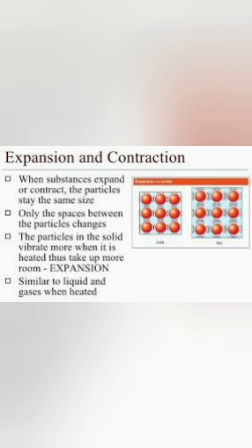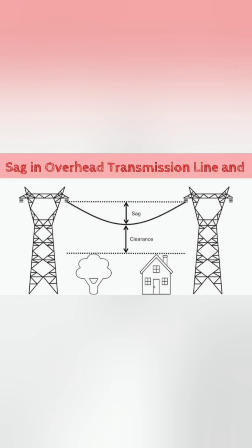Gases expand the most on heating, followed by liquids and solids in that order. The extent of expansion depends on the original size and the amount of heat supplied. It also varies from material to material. When objects cool down, they contract or shrink in size.